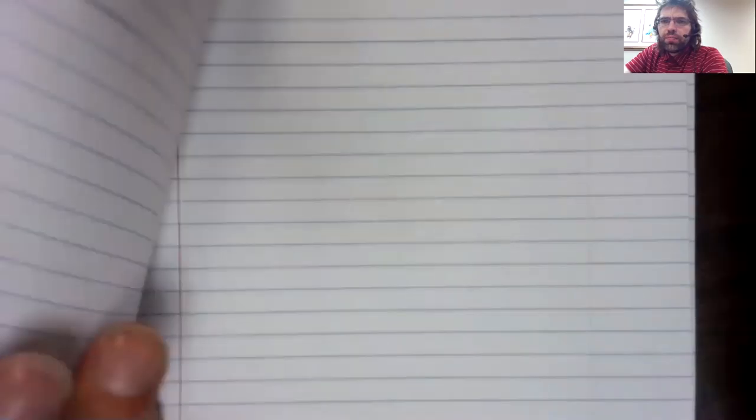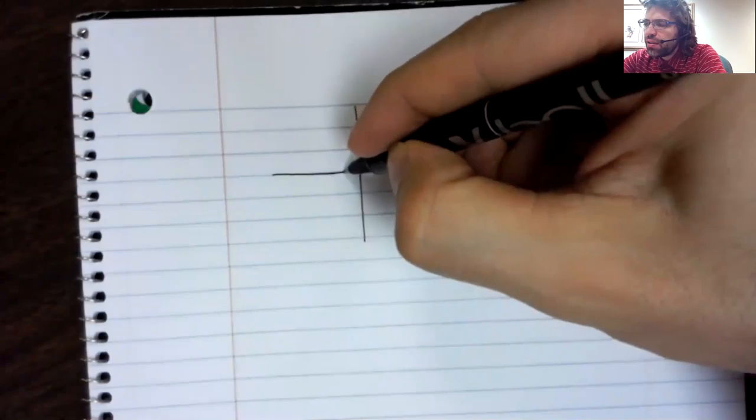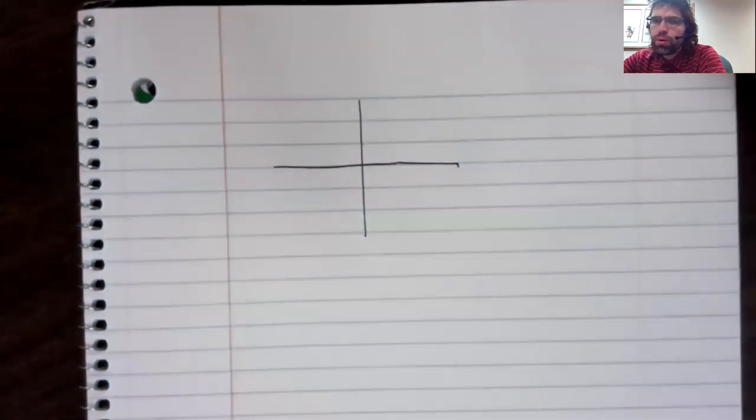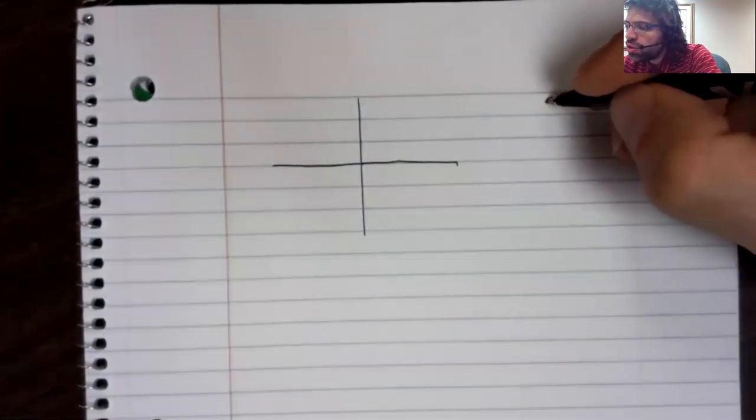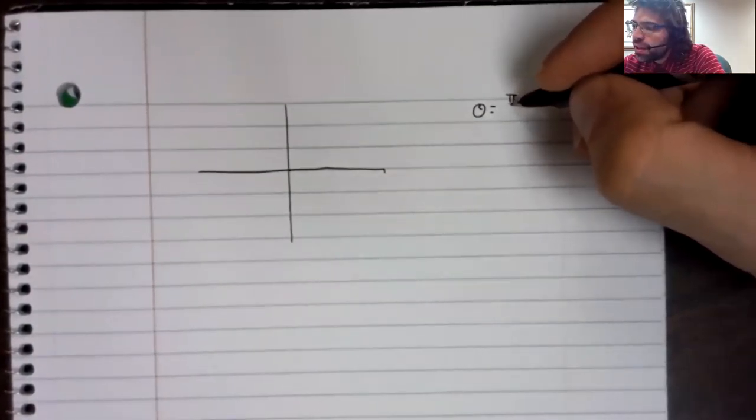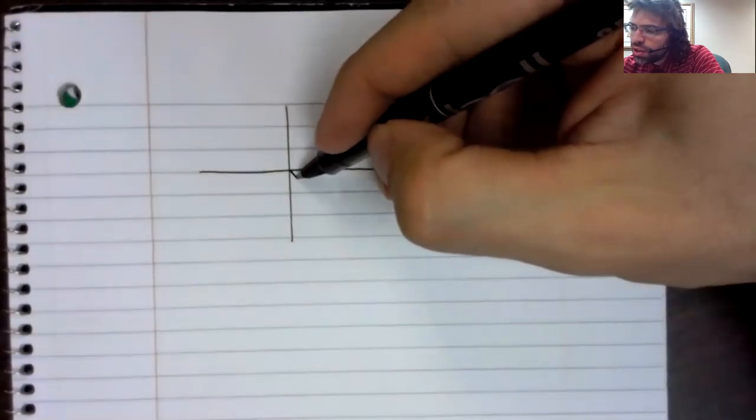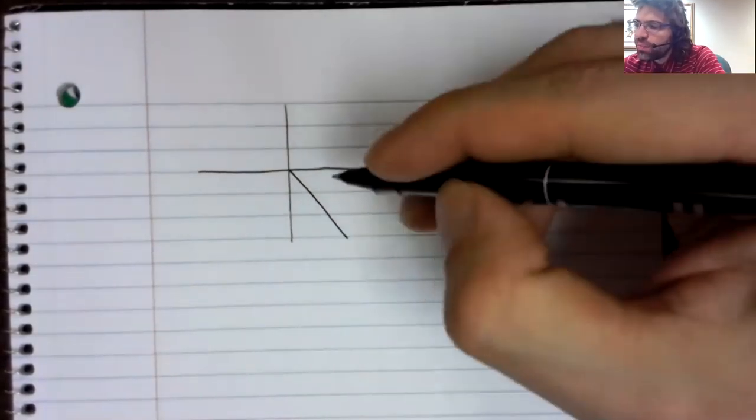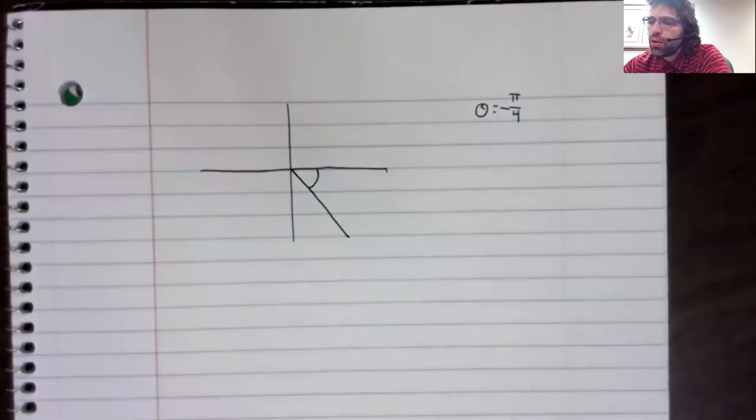r and theta are both allowed to be negative. If theta is negative, that's straightforward. We're used to working with negative angles from when we define the trig functions on the unit circle. If we have, say, negative pi over 4, that just means we go clockwise instead of counterclockwise. So here's negative pi over 4.